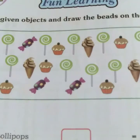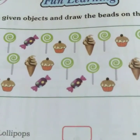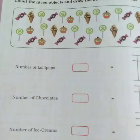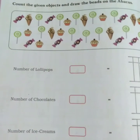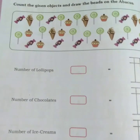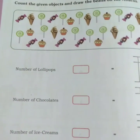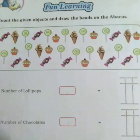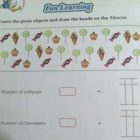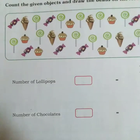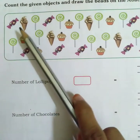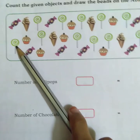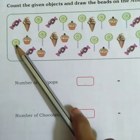Now let's learn for learning sheet 2. Count the given objects and draw the beats on the abacus. Let's count the objects. How many objects are there? 1, 2, 3, 4 — there are 4 objects.